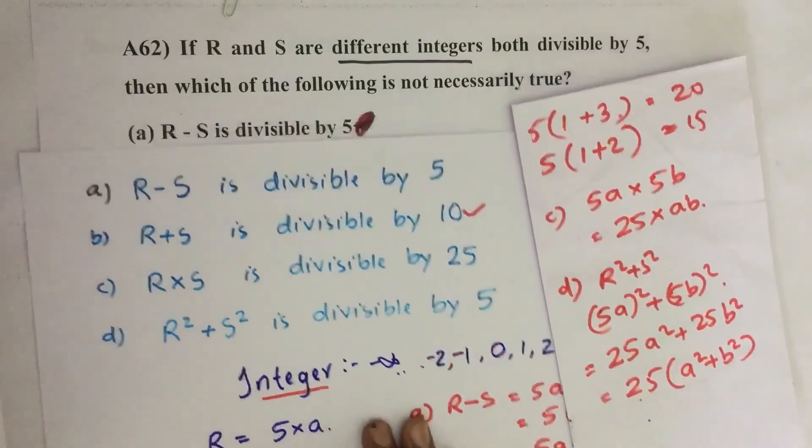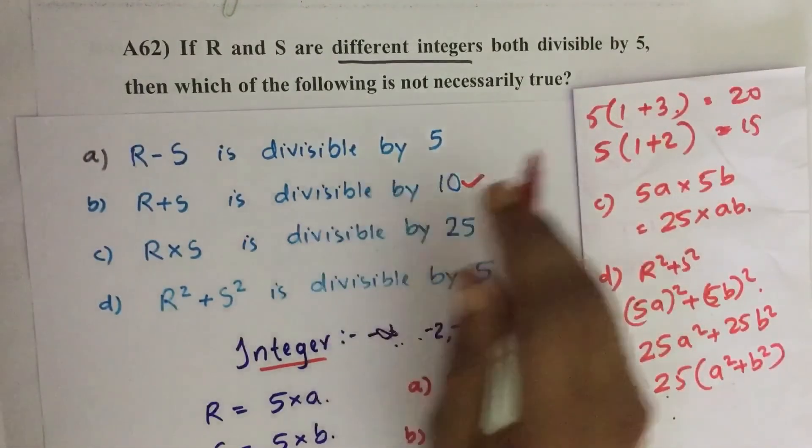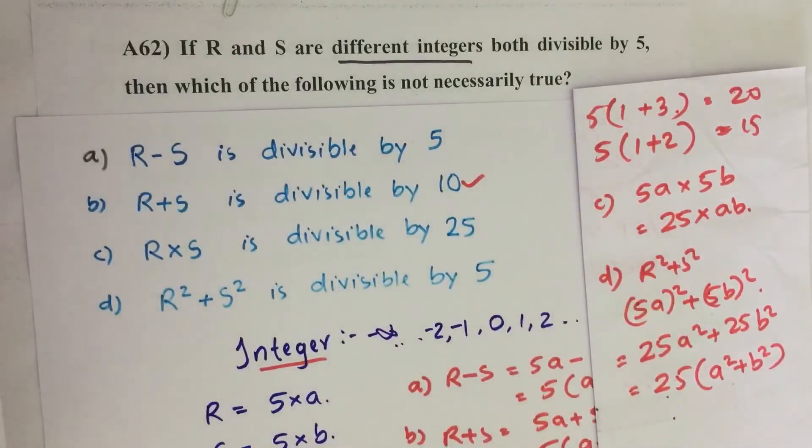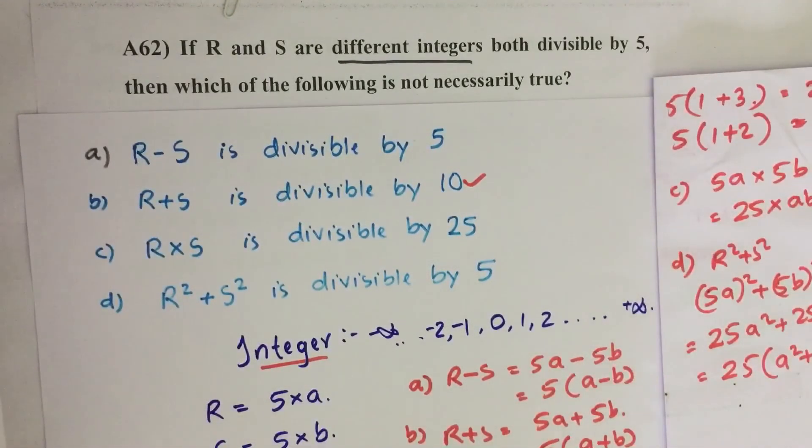So our answer is R plus S is divisible by 10 is not necessarily true all the time. Option B is our answer. If you have any suggestions, please do comment. Don't forget to like, share, and subscribe to our channel. Keep supporting and loving us. Jai Hind.